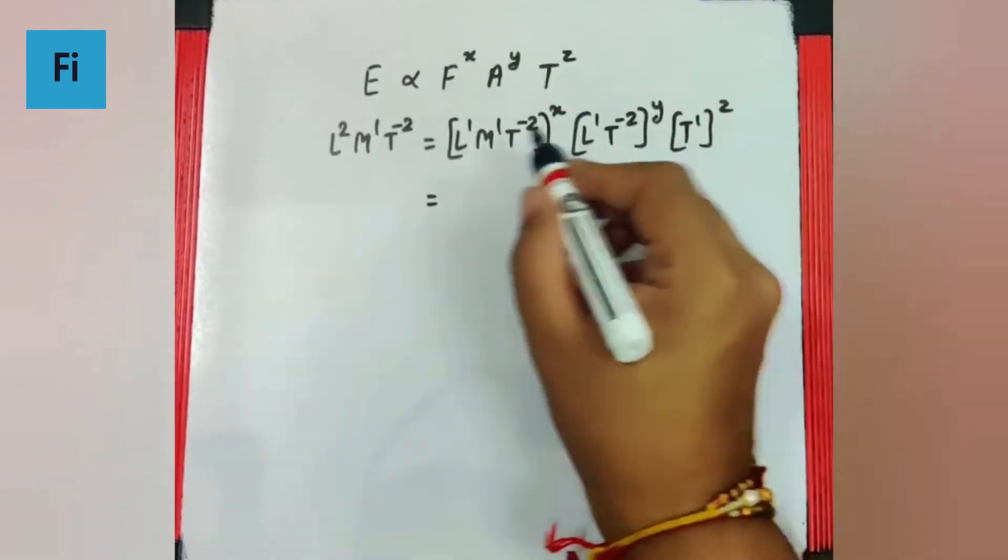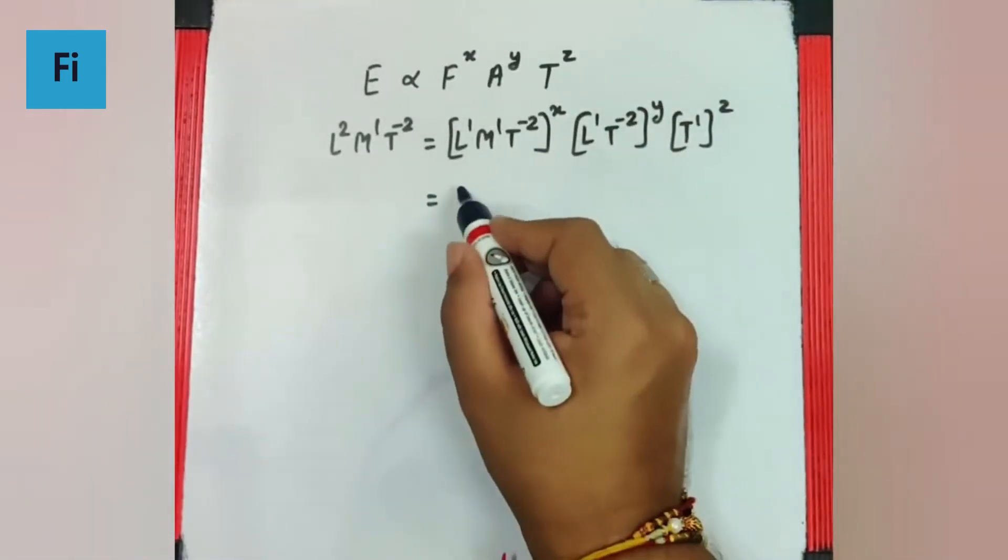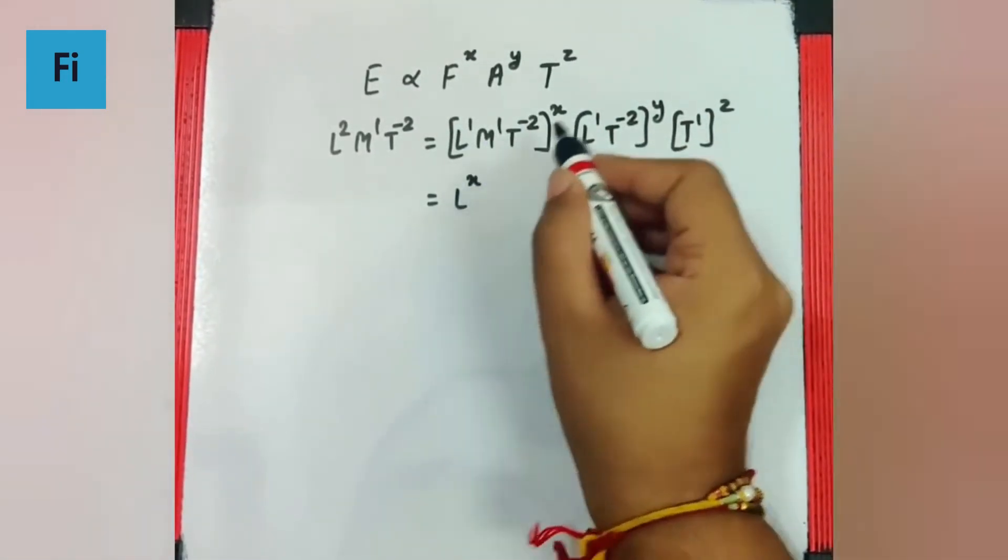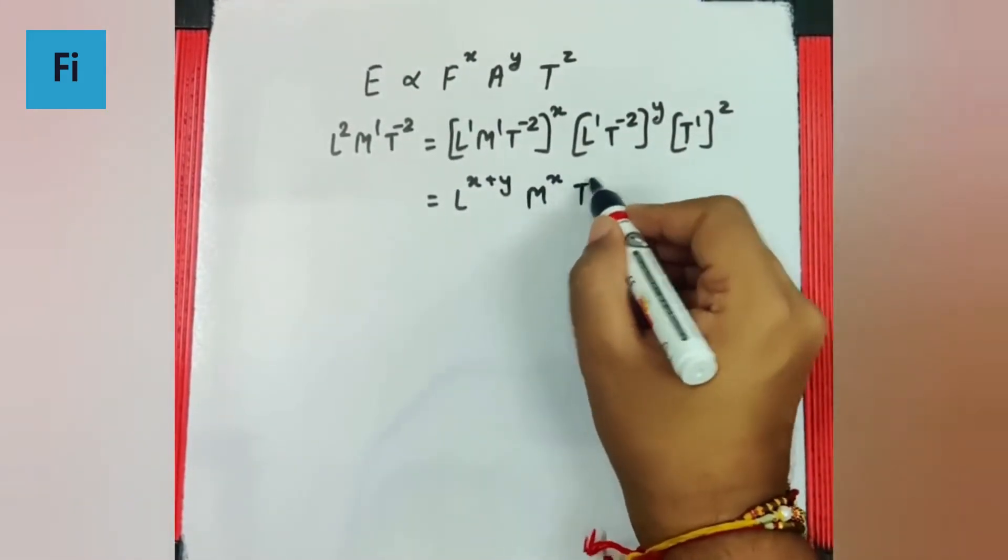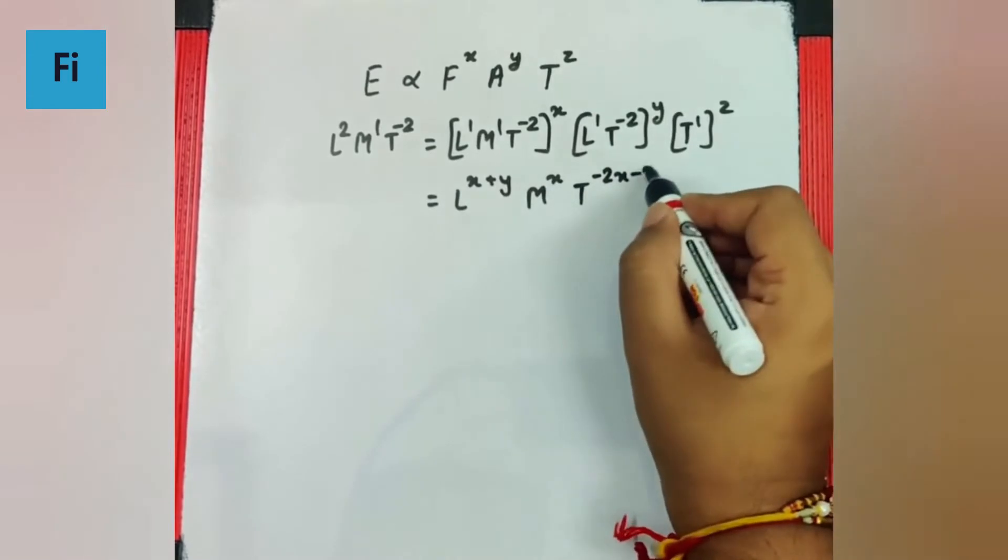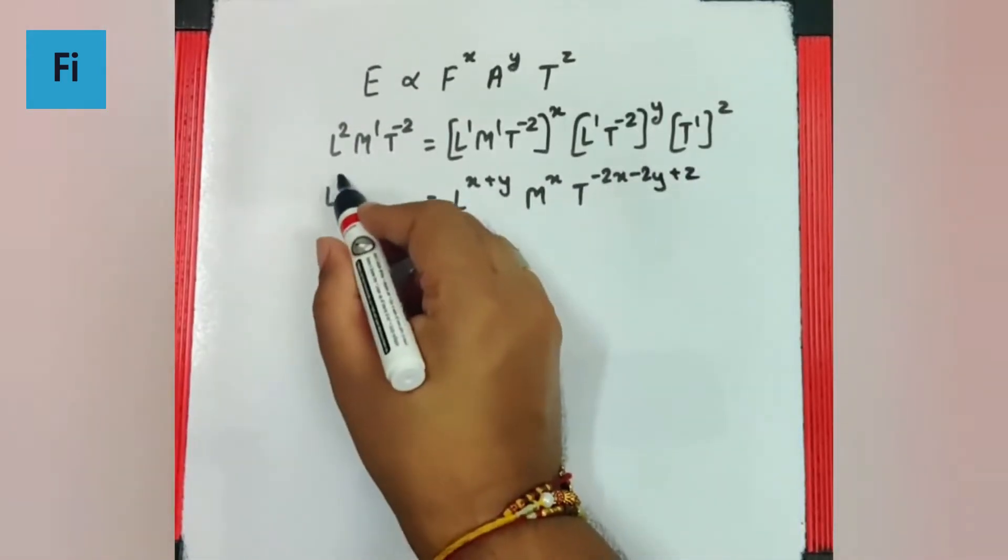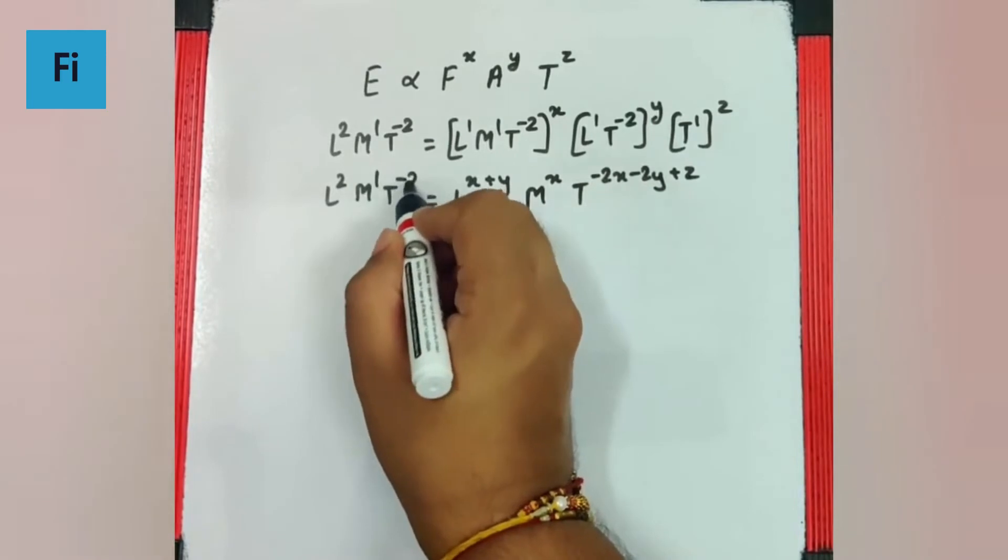So if we add all the length, mass and time separately, we get L raised to x plus y, M raised to just x, T raised to minus 2x minus 2y plus z. And here we have L2 M1 T minus 2.